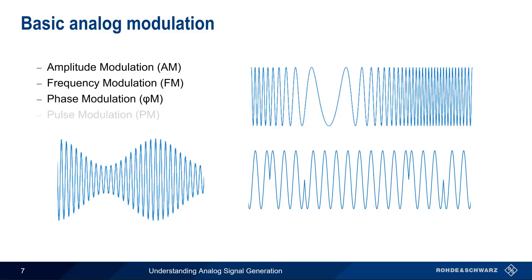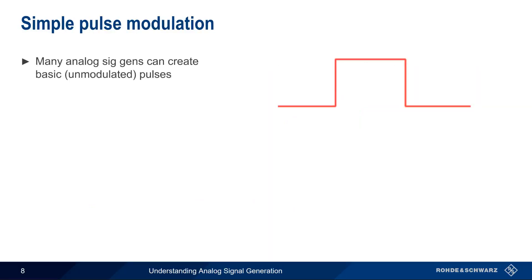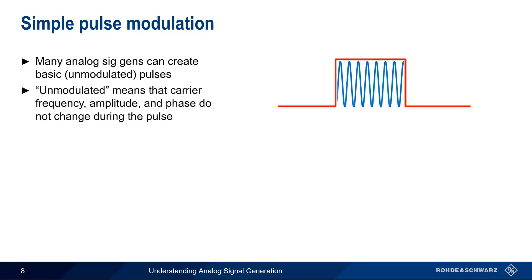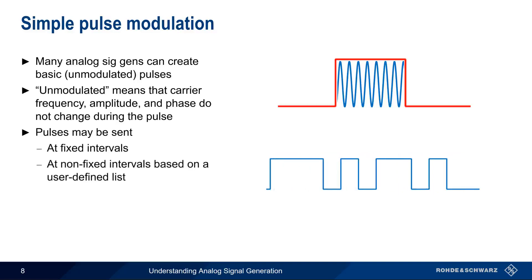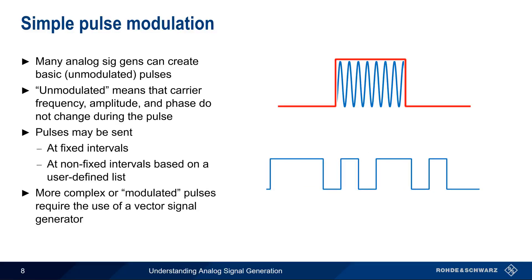Another type of basic analog modulation is pulse modulation. Most analog signal generators can create basic unmodulated pulses. The unmodulated RF carrier is essentially switched on and off to create the pulses. Unmodulated means that the RF carrier does not change in frequency, amplitude, and/or phase during the pulse. Pulses can be sent at fixed intervals, but in some cases, analog signal generators can vary the pulse width and pulse spacing by means of a user-defined list. If we want more complex or modulated pulses, such as a chirped or polyphase code, we usually need to use a vector signal generator.